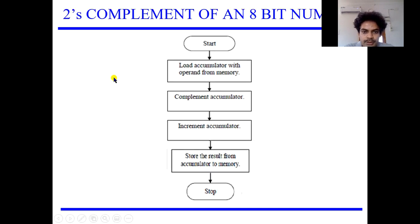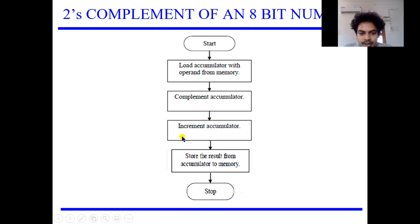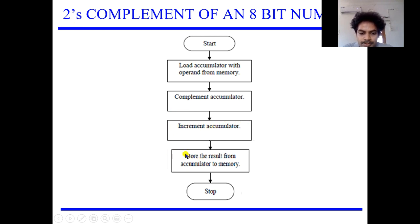So what is a 2's complement and what are we going to do in this program — let's look at the flowchart. First, I am going to load my data from the memory into the accumulator. Then I am going to complement the accumulator value, which is nothing but the 1's complement. And if I add 1, or increment the accumulator value by 1, that is when I get the 2's complement. This output is available at the accumulator. I need to store it into a memory location — that is my next step.